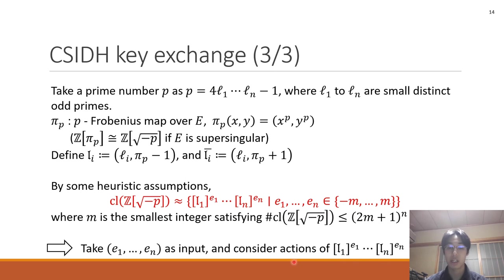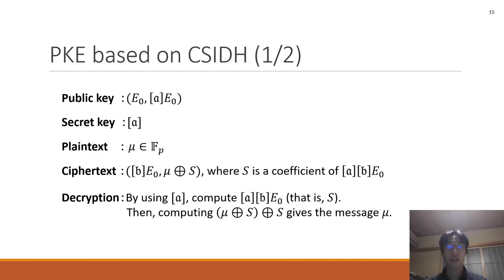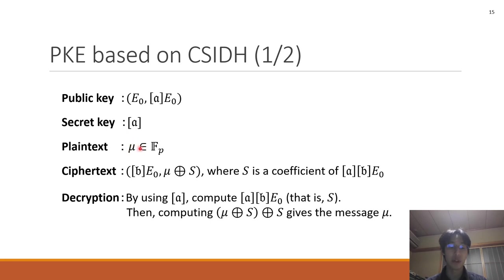Next, I explain the public key encryption based on CSIDH. I will explain one of the simplest PKE schemes based on CSIDH. The public key is E0 and R*E0, and the secret key is R. And let the plaintext be μ. The ciphertext is B*E0 and μ XOR S, where S is a coefficient of R*(B*E0).